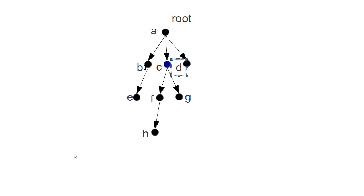A breadth first traversal would go A, B, C, D, E, F, G, H. When we talk about a depth first traversal, there are actually multiple types of depth first traversals.